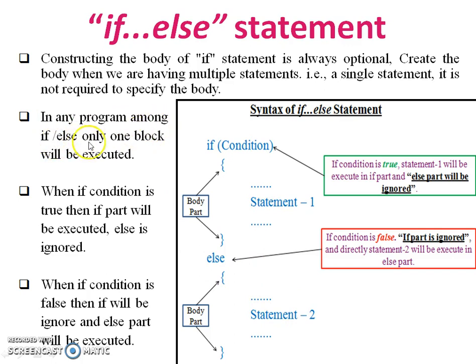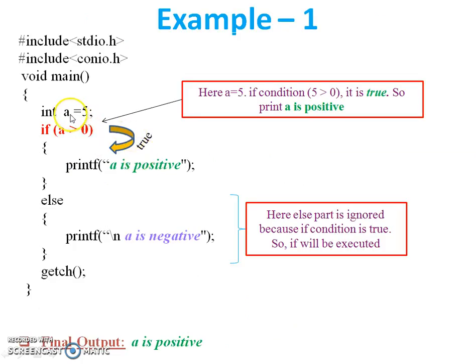This is example one. An integer value will be stored in variable a, so a equals 5. Now check the condition: if a greater than 0. Put the value of a here. If 5 greater than 0, yes, condition is true. Then printf 'a is positive', and the else part will be ignored. Final program output is 'a is positive'.